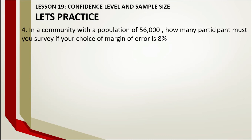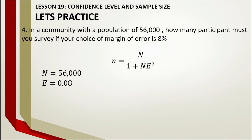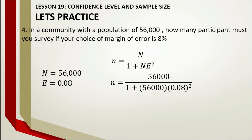Sample problem 4: In a community with a population of 56,000, how many participants must you survey if your margin of error is 8%? Given: N = 56,000, margin of error = 8% converted to 0.08. Applying Slovin's formula, the answer is 155.82, which rounds up to 156.